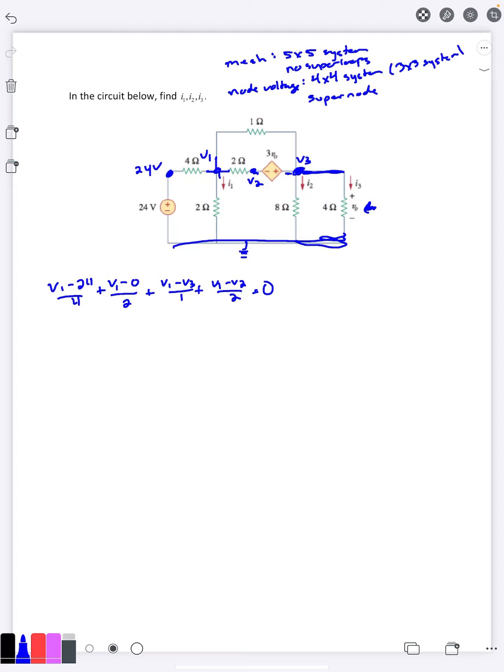Then if I do the v2 v3 super node here, I look at the currents leaving it. There are four there. I would have v2 minus v1 over 2, then v3 minus v1 over 1, and then down v3 minus 0 over 8, and right v3 minus 0 over 4 equal to 0.